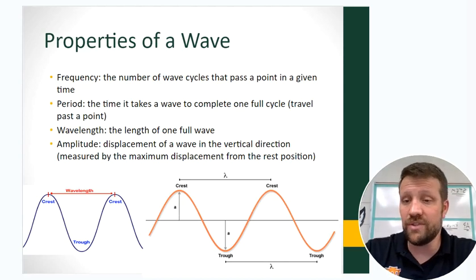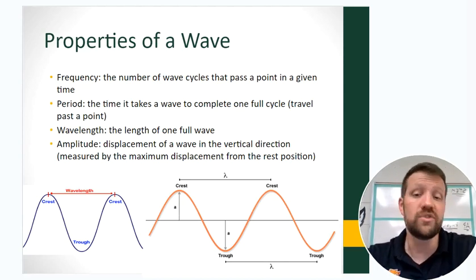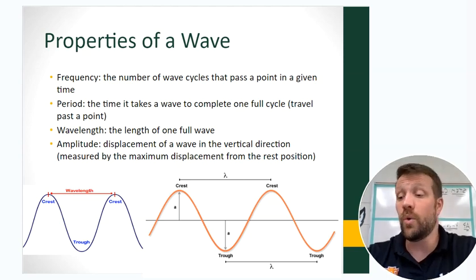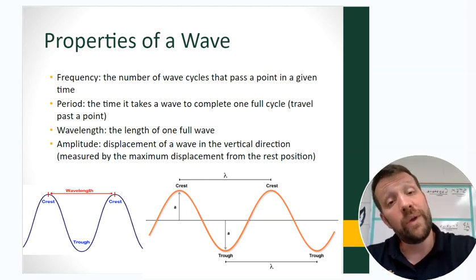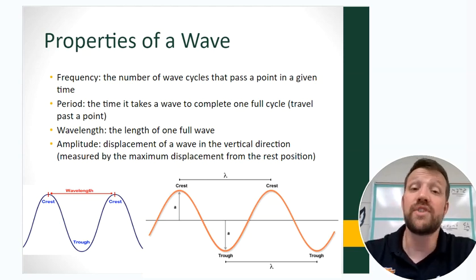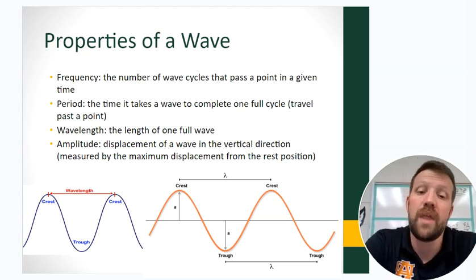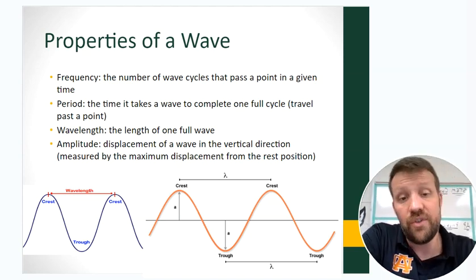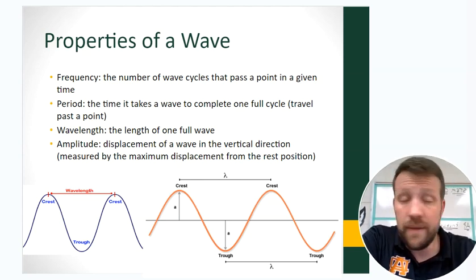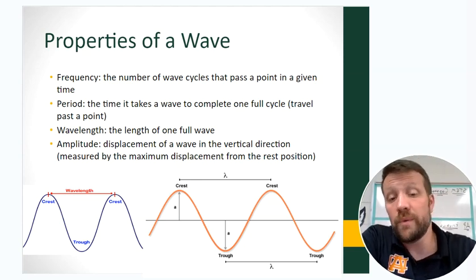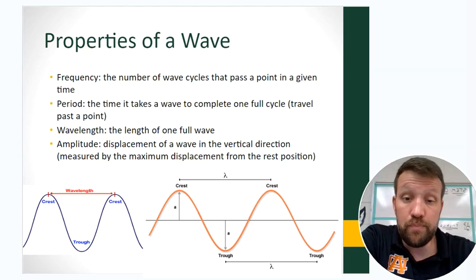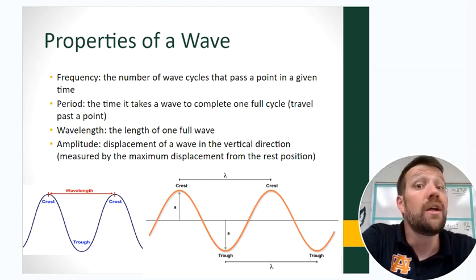Some properties of waves. The frequency of a wave is wave cycles in a given amount of time — for our purposes, cycles per second, because electromagnetic waves travel at the speed of light and many wave cycles pass within a second. The period is typically used for slower traveling waves — it's the time it takes one wave to complete a full cycle. For big ocean waves it might take three, four, or five seconds per wave. Frequency and period are inverses of each other.